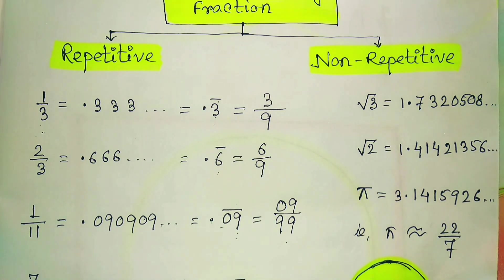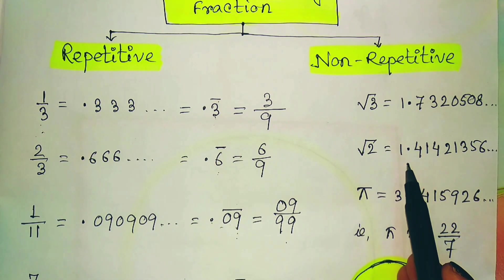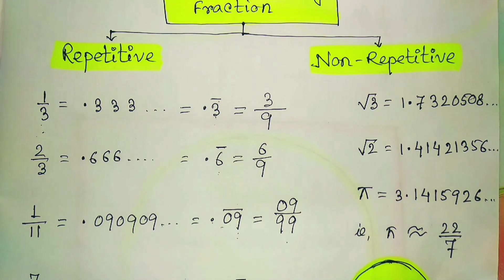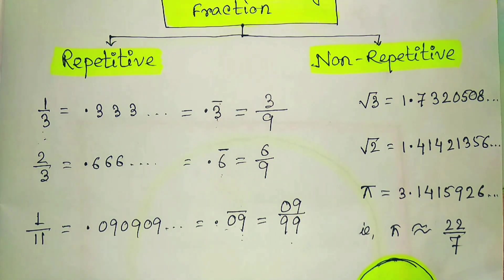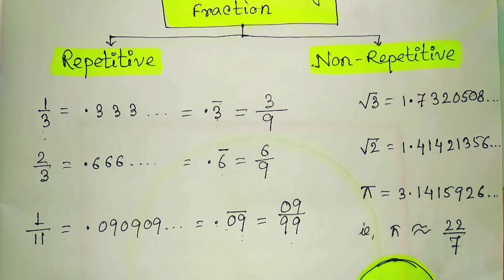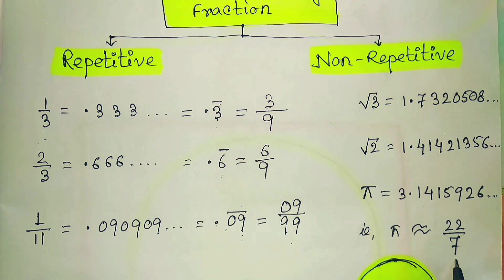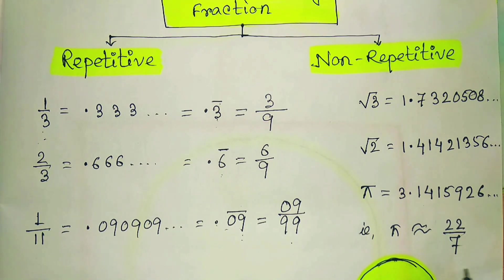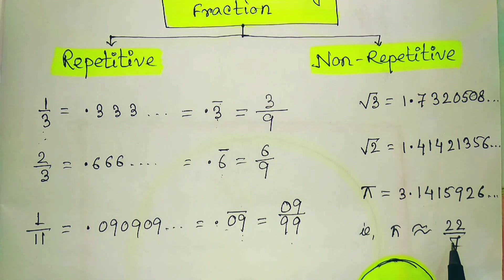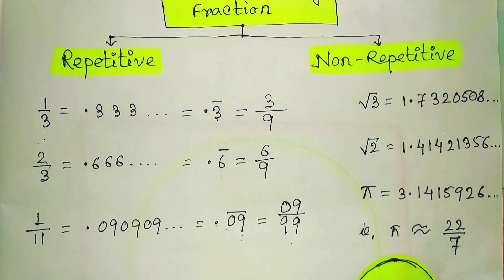We cannot express √2 in exact fractional form. Similarly, π is a very important non-repetitive fraction. We often use π ≈ 22/7 or 3.14, but 22/7 is only an approximation — it is not the exact value of π. That is why π is a non-repetitive, non-terminating number.